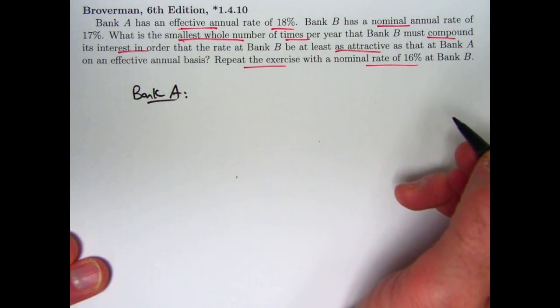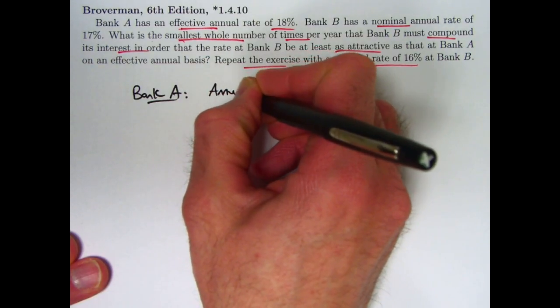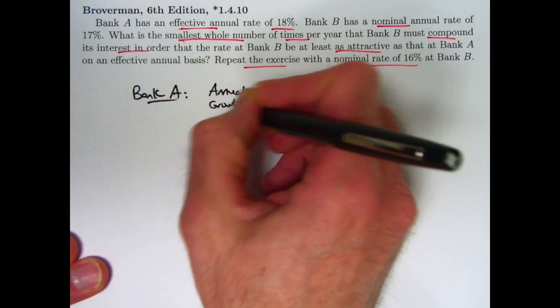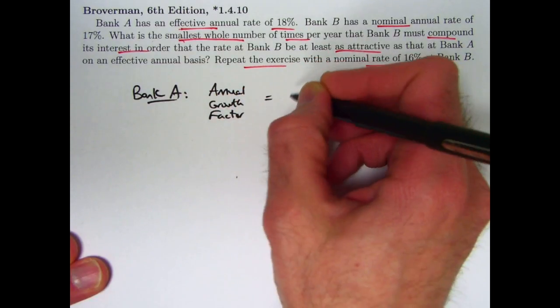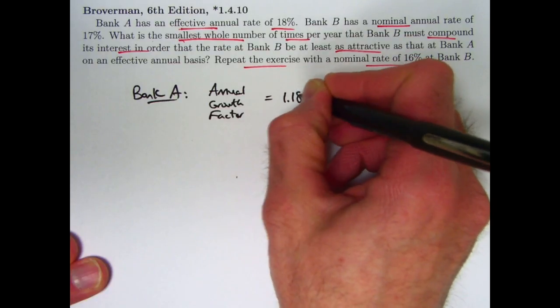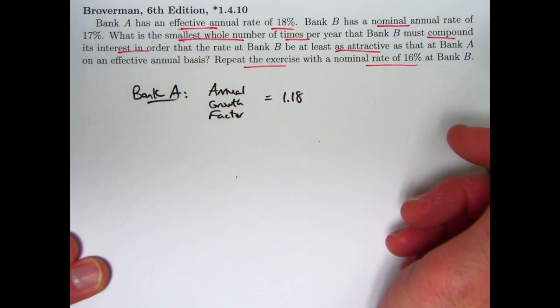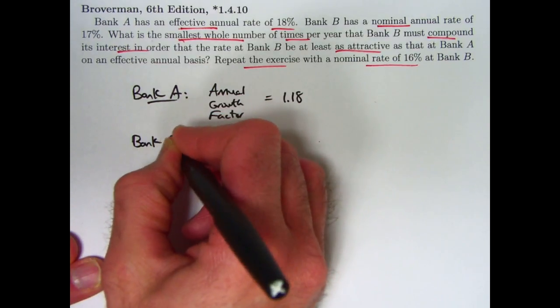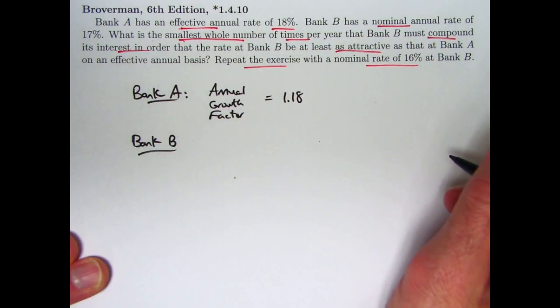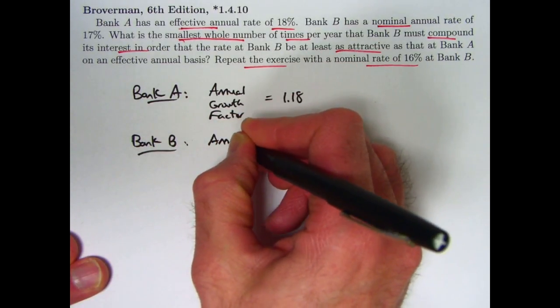All right, so we've got bank A. The fact that the effective annual rate is 18% means we could say the annual growth factor, 1 plus I, is in fact 1.18. So this would mean one unit of money, for example, would grow to 1.18 units of money after one year. It's compounded just once per year. That would be the same as 1 plus I when I is 0.18. How about for bank B? What's the annual growth factor?